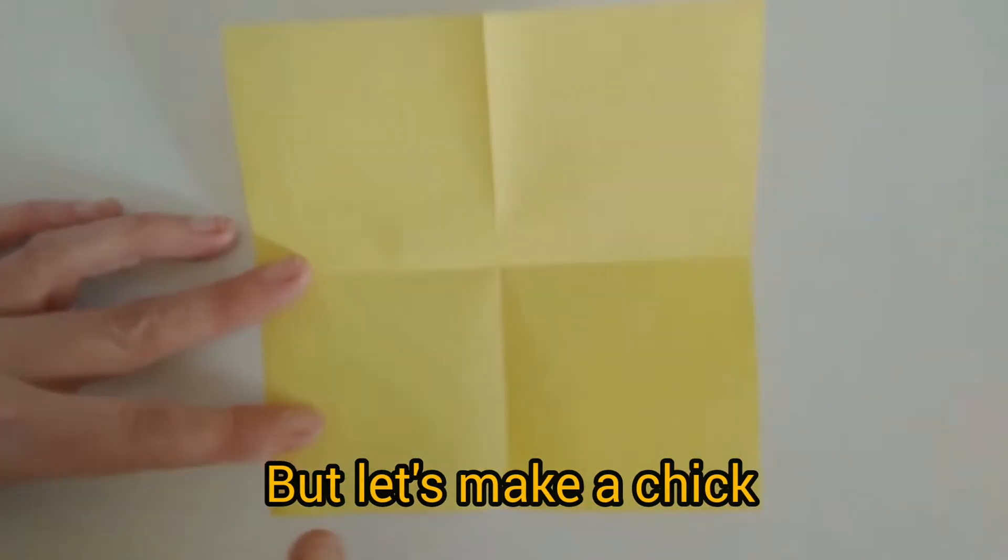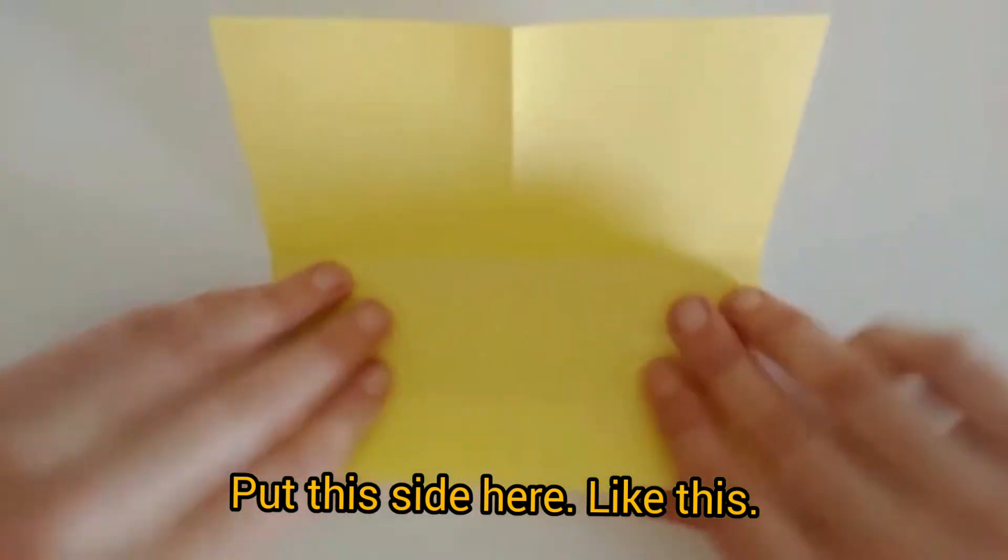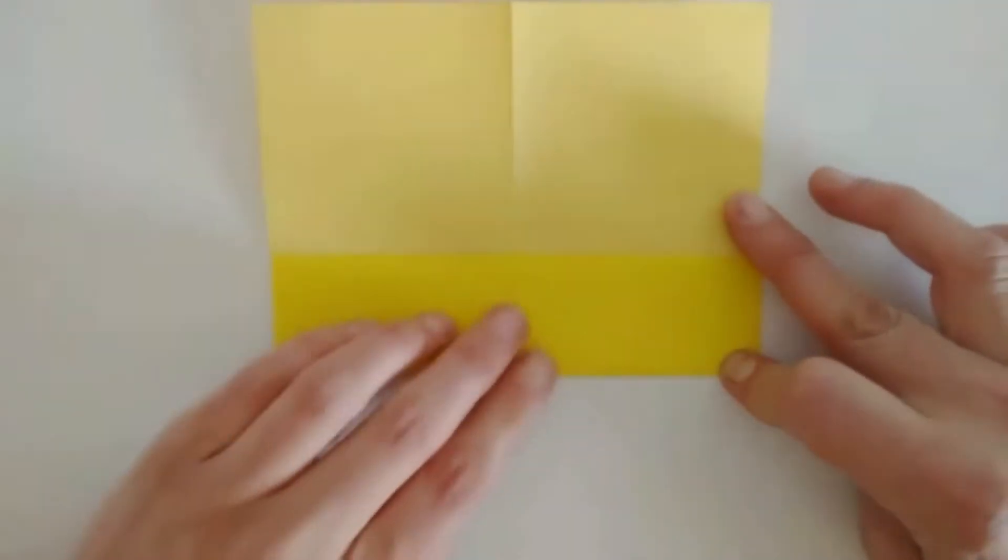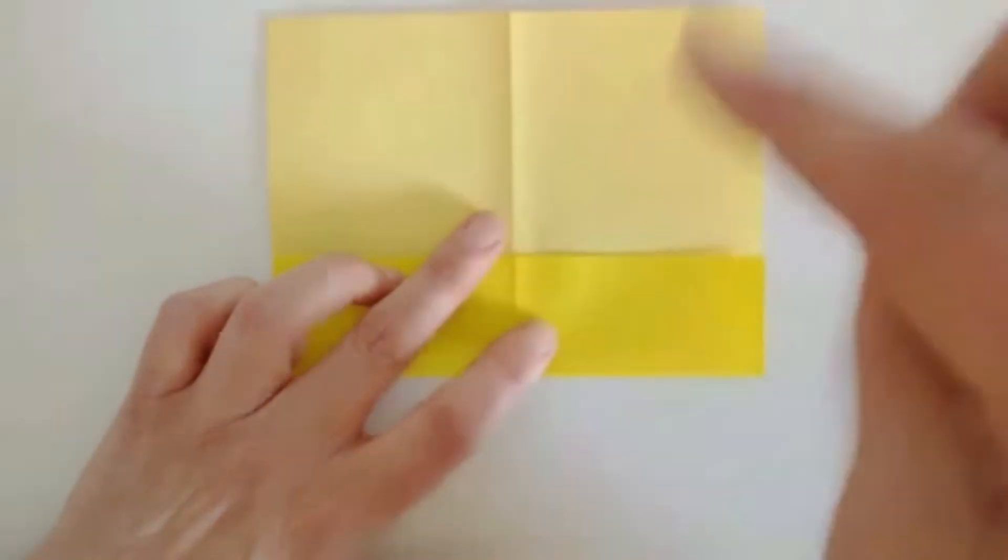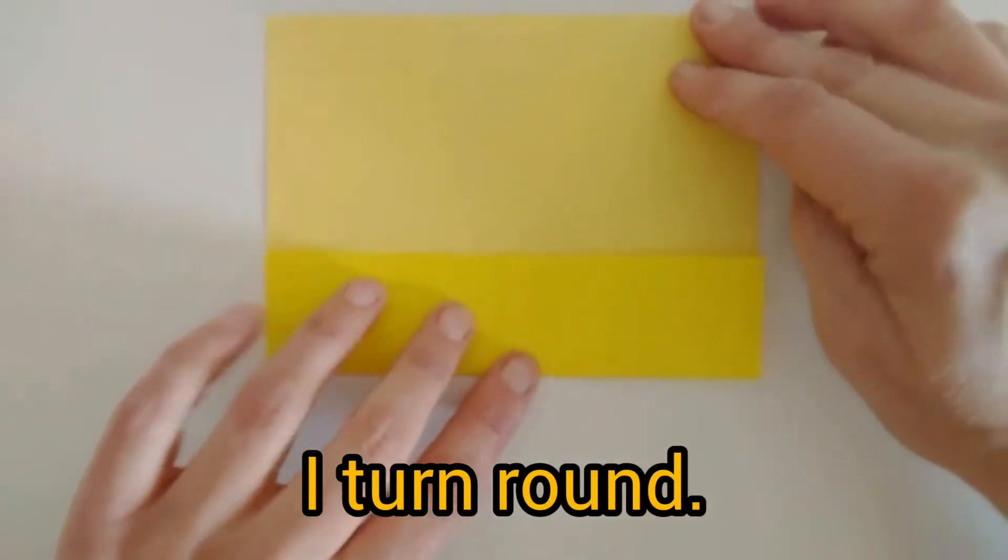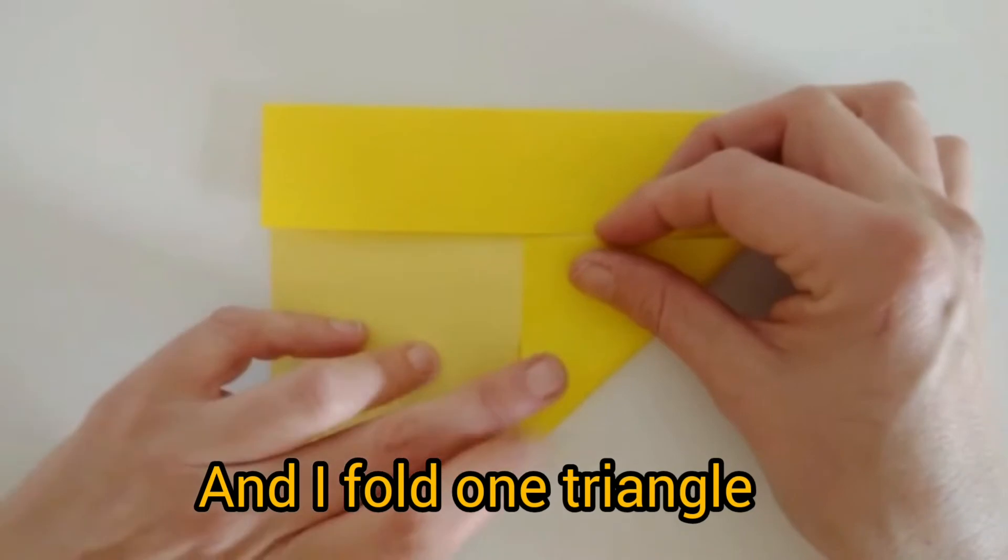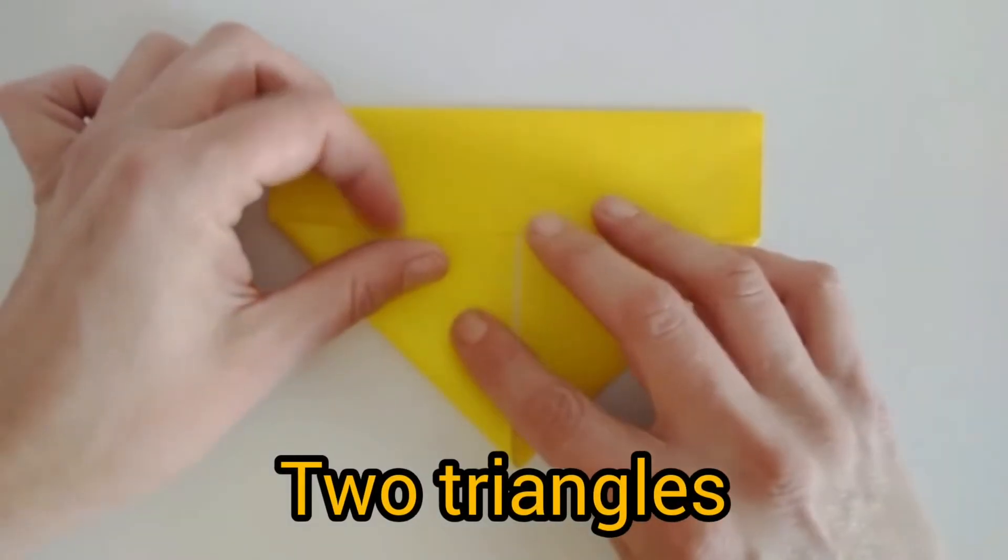So now I put this side here like this. And now I want to put this here and this here. So I turn round and I fold one triangle. Two triangles.